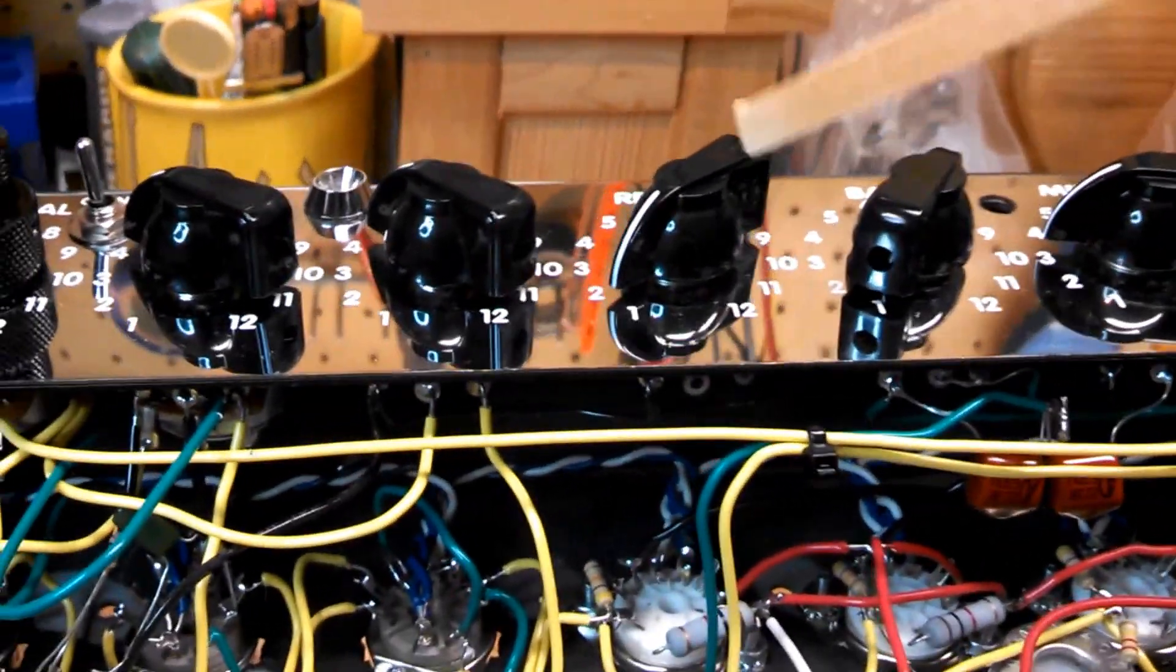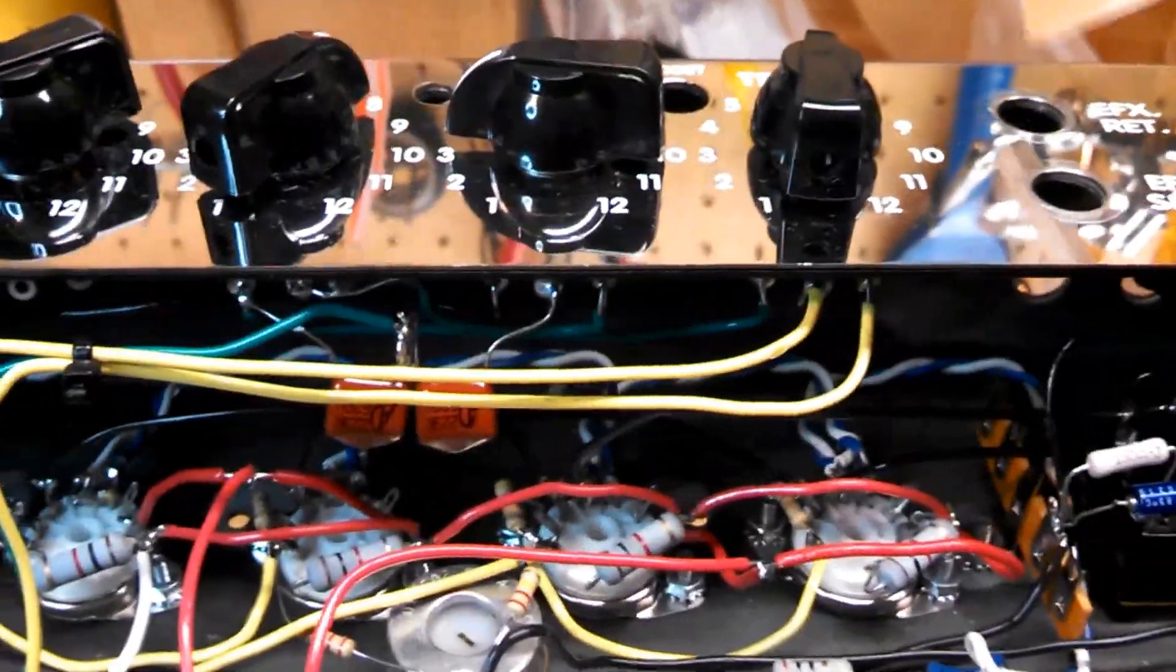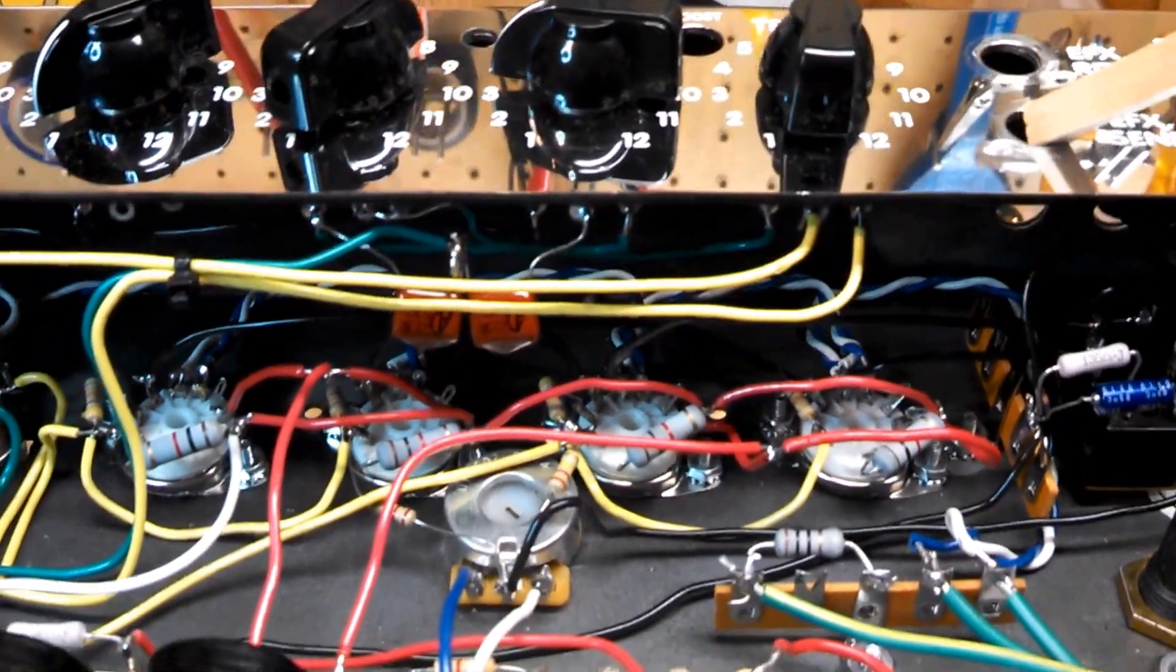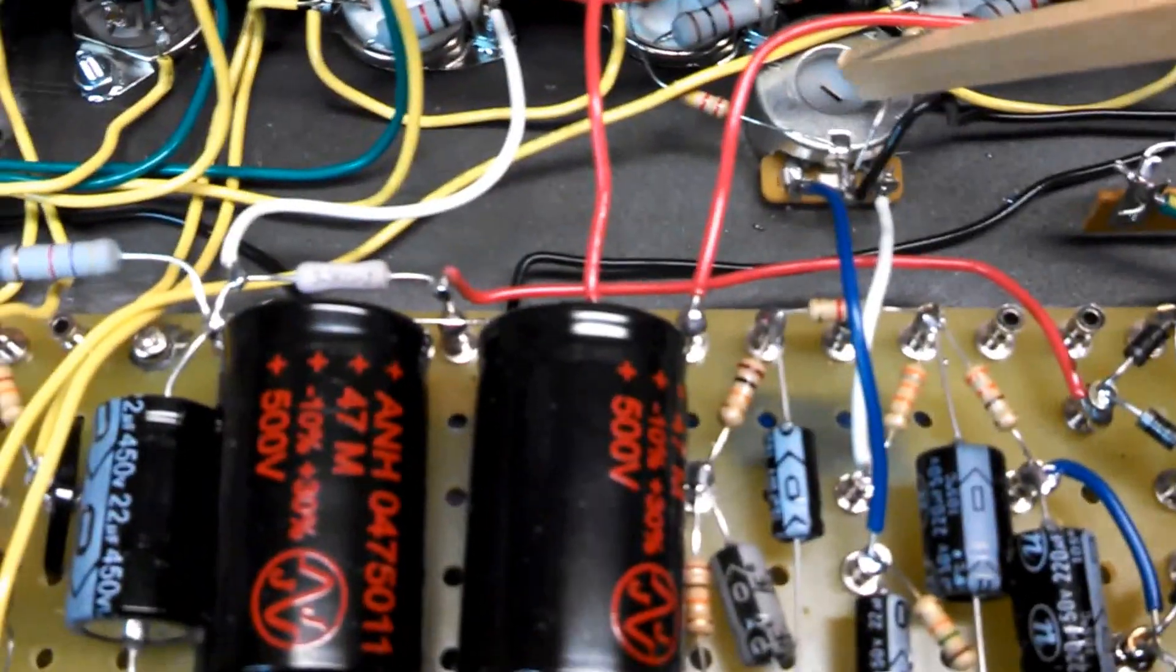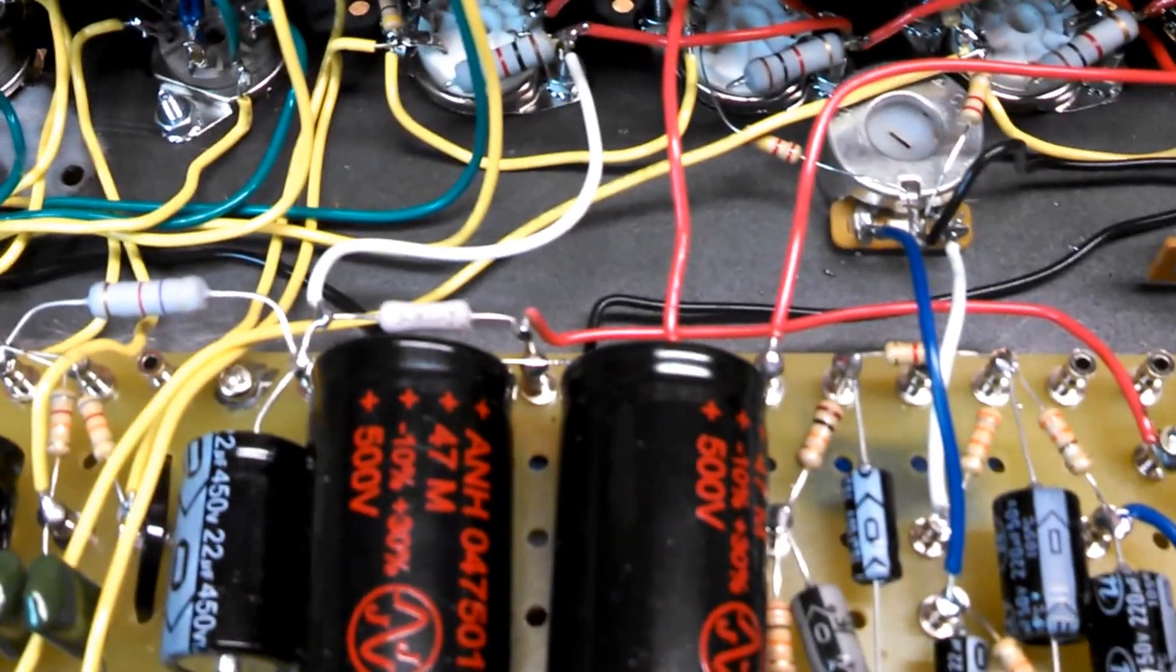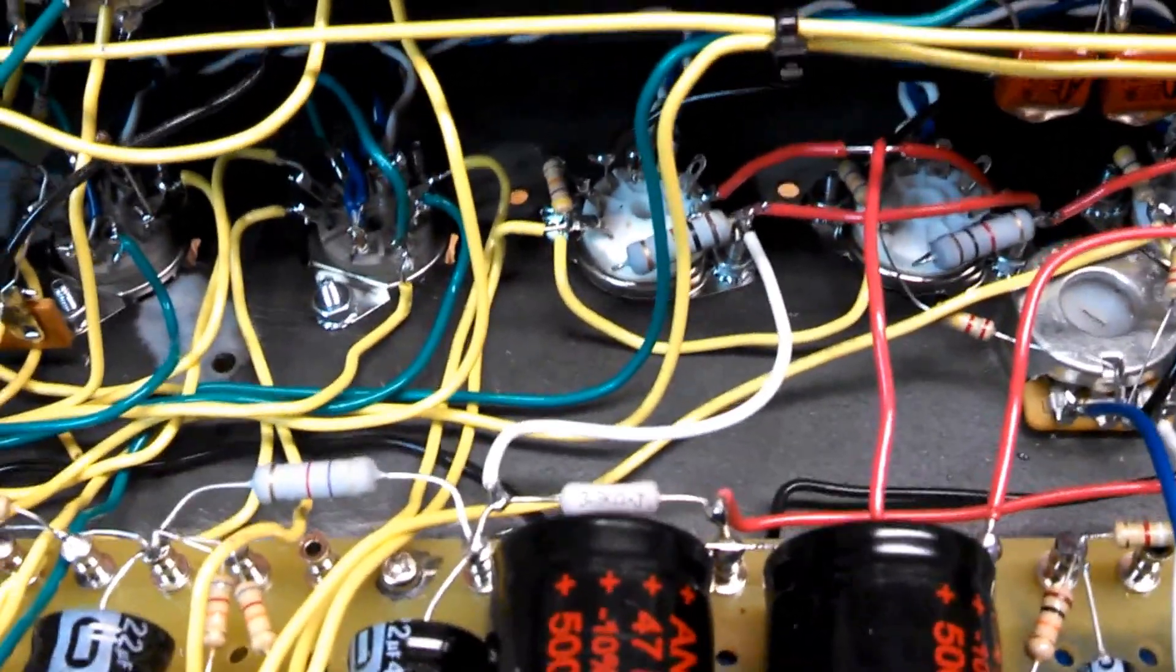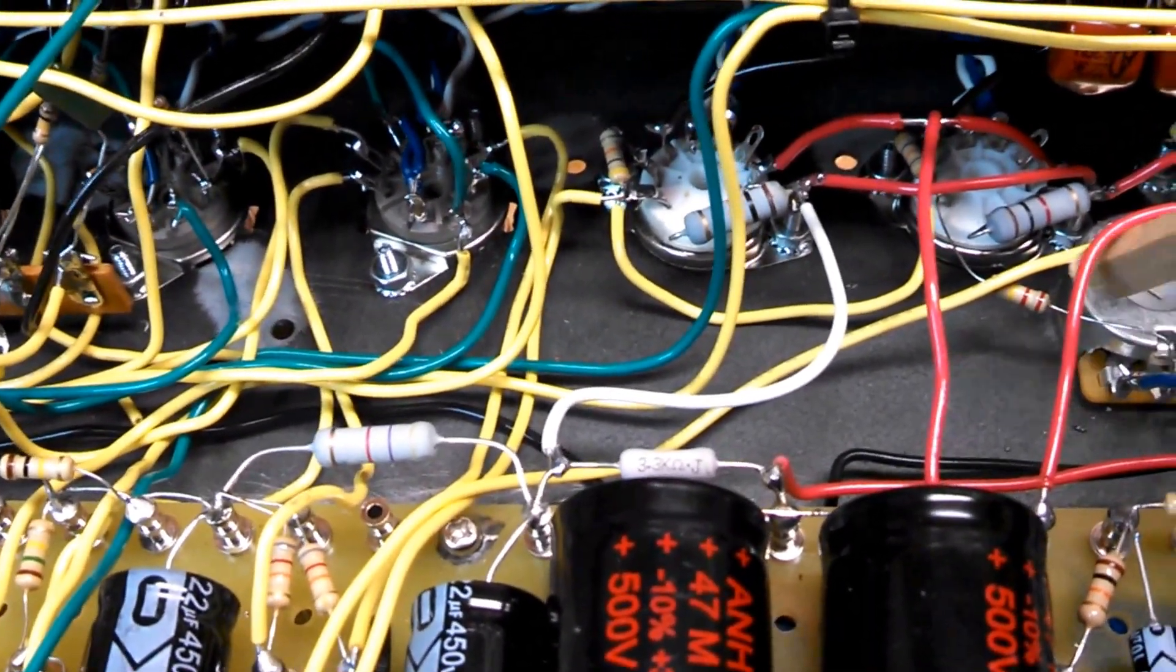And then, I don't have the reverb in yet, and I plan on hopefully doing a tremolo circuit in here instead of the effects return. Some of the things that I have also here is this part here is for the fixed bias adjust. Especially now that I've got the filament wire in parallel, I can pull two tubes.